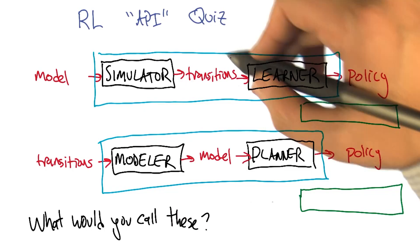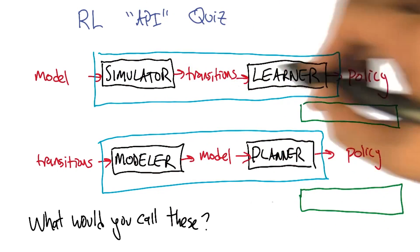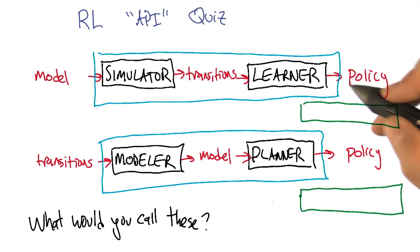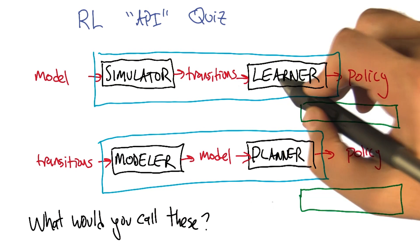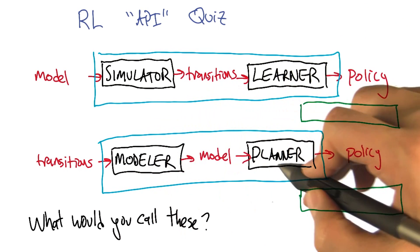So again, as a composed system, this is turning a model into a policy. So it is a kind of planner, but it's a planner that uses a learner inside. And this is a learner that uses a planner inside.